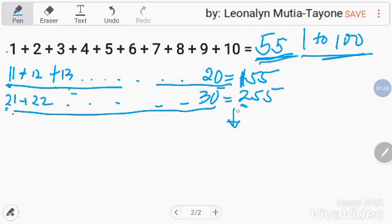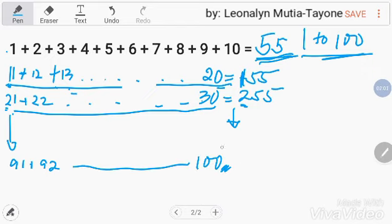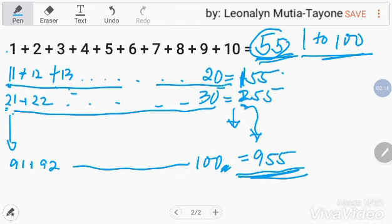So, bali, hanggang maging sa last nito, that is 91 plus 92 hanggang 100 na. Ito yung last mo, hanggang 100 na. And this is 955. Bali, ang i-add mo si 55, 155, 255 hanggang 955.